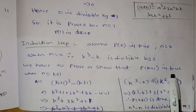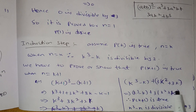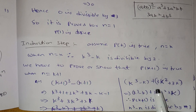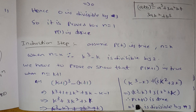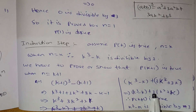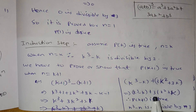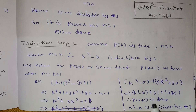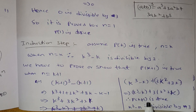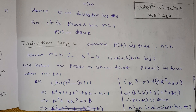So we have 3k square plus k as the common factor expression. P of k plus 1 is true. Therefore n cube minus n is divisible by 3.